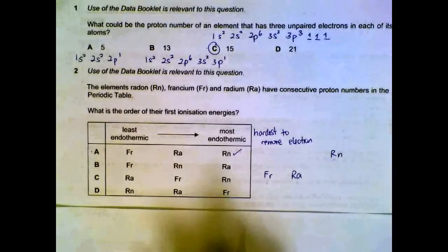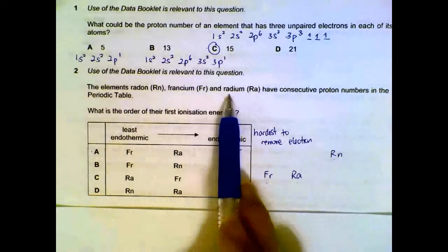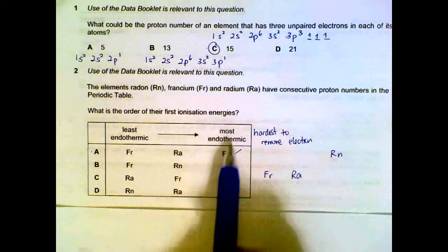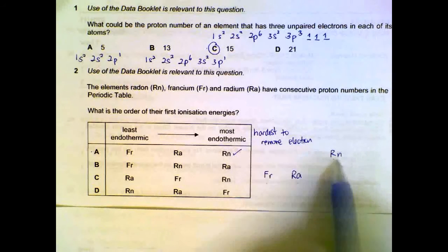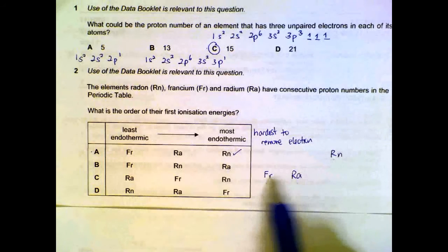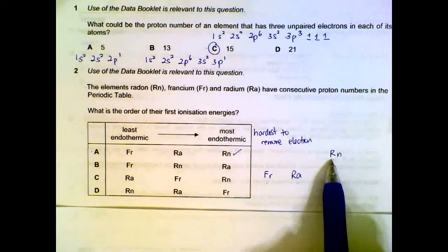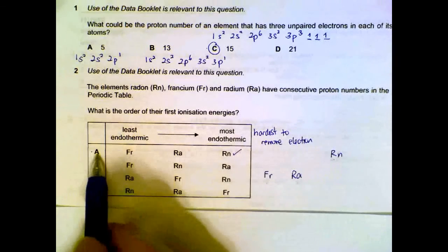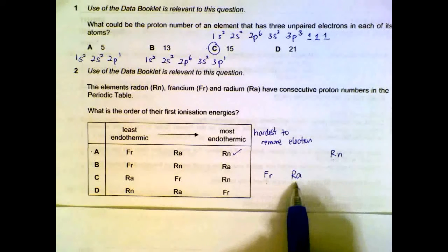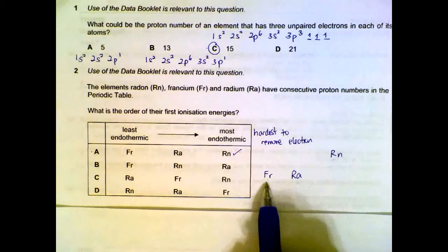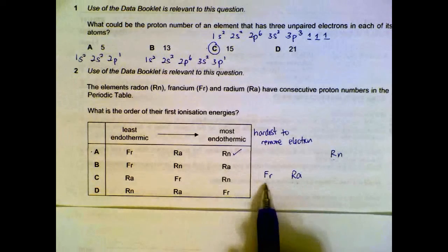Number two. Radon, francium and radium, which one will be the most endothermic first ionization energy? It means the hardest to remove the electron. Radon, you have to know that radon is one period above the other two elements, so it will be the most difficult to remove that first electron for radon. So that gives us option A. Why is it easier to remove francium compared to radon? You have to remember that francium has less protons than radon, so the effective nuclear charge for francium is lower.